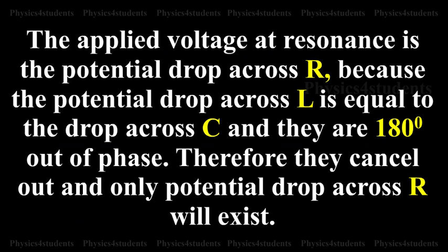The applied voltage at resonance is the potential drop across R, because the potential drop across L is equal to the drop across C and they are 180 degrees out of phase.